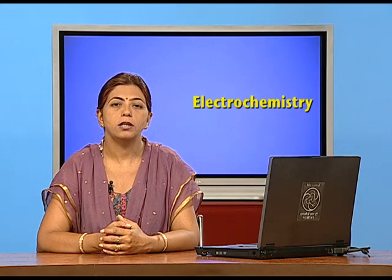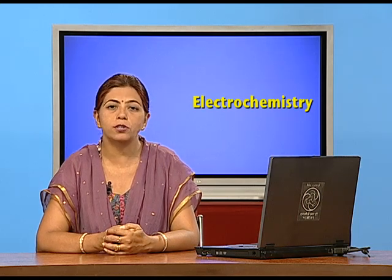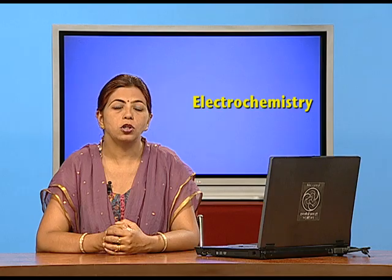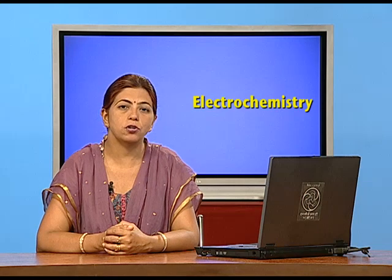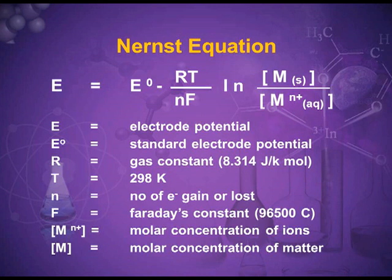Small n is the number of electrons lost or gained in the redox reaction. F is Faraday's constant and its value, which is to be used, is 96500 coulombs. The concentration of M solid means the concentration of the reduced state, and concentration of M n-plus means concentration of the oxidized ions or the oxidized state.